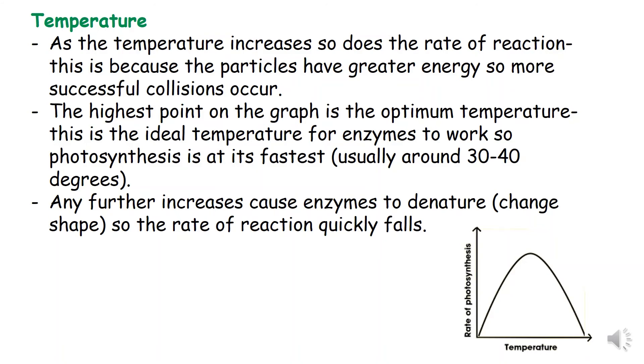The highest point in the graph is called the optimum temperature. At this temperature, photosynthesis is at its fastest, because it is the ideal temperature for enzymes to work at. It is usually around 30 to 40 degrees. When the temperature goes above the optimum temperature, the enzymes involved in the process of photosynthesis will start to denature. This will then stop the process of photosynthesis, even if the other factors are high.